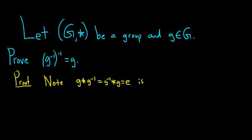And this is because g inverse is the inverse of g. That means when you take g inverse and you star it with g on both sides, you get the identity element.